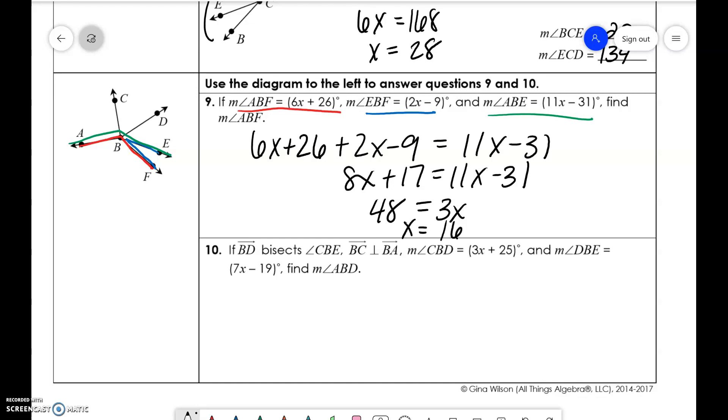And then we want to find the measure of ABF. So ABF is plugging into the red. So 6 times 16 plus 26 is 122 degrees.